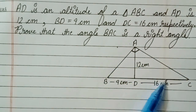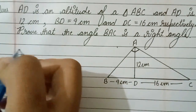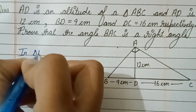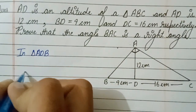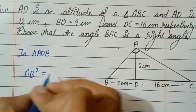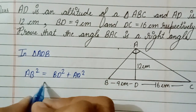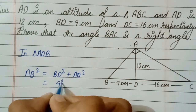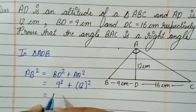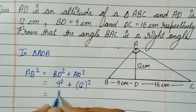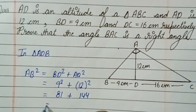First we will find AC and AB. In right angle triangle ADB, by Pythagoras theorem: AB square equals BD square plus AD square. BD is 9 and AD is 12, so 9 squared is 81 and 12 squared is 144.